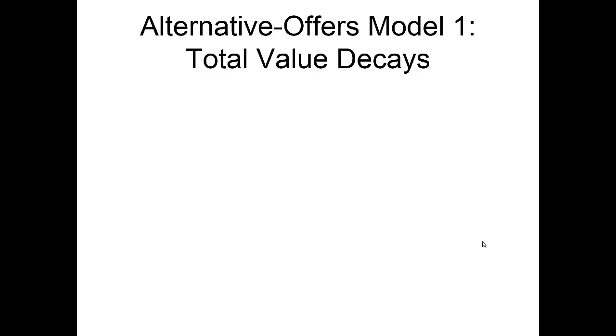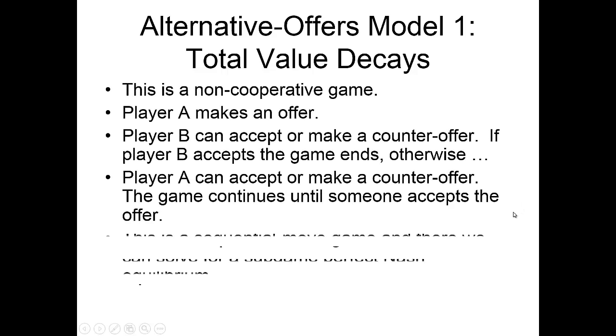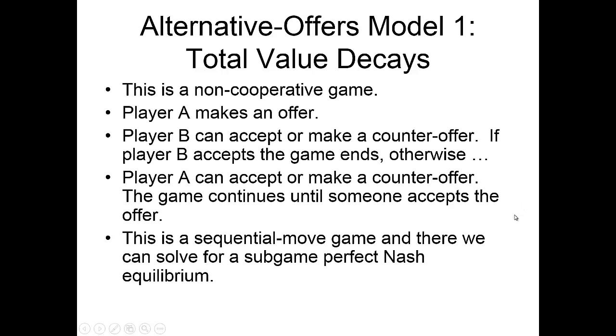When we actually look to solve a bargaining problem, the way we'll be doing this in our game theory class is with alternative offer models, where the total value decays. We'll have a game where A makes an offer and B can accept or reject. If B accepts, the game is over. If B rejects, the game continues and B can make a counteroffer. Then A can accept, and the game is over — or A can make another counteroffer. The game continues until someone accepts the offer.